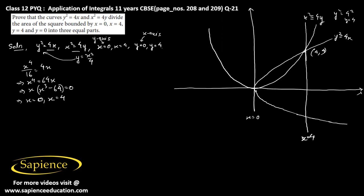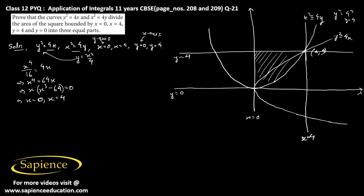y equals 0 is the x-axis, and y equals 4 is the straight line parallel to the x-axis passing through the point of intersection. This is y equals 4. These two curves divide the area of the square — this square — into three equal parts.